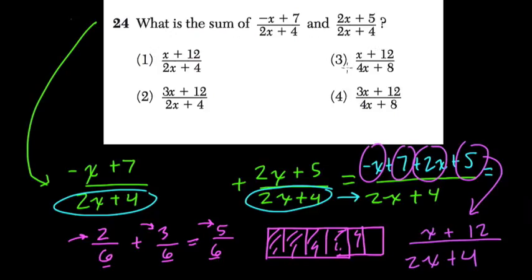which is, well, this is out because they added the denominators to get 4x plus 8, and here the only reasonable choice is 1. x plus 12 over 2x plus 4. Alright, hope that helps.